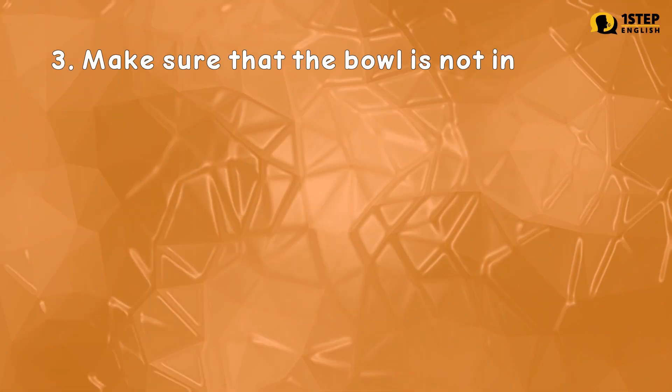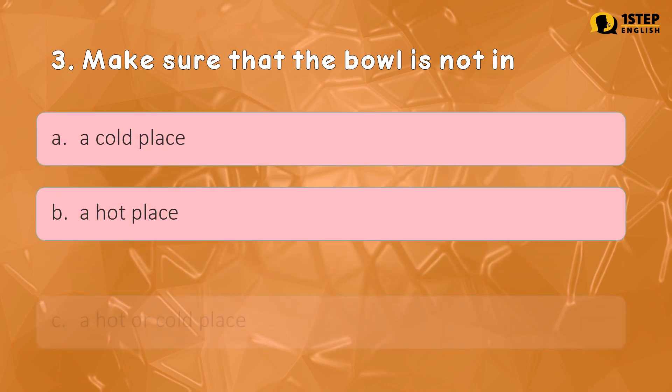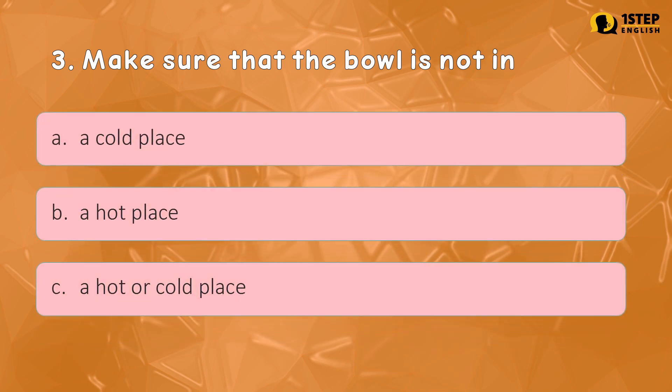Number three: make sure that the bowl is not in — Letter A: a cold place. Letter B: a hot place. Letter C: a hot or cold place. The correct answer is Letter C — a hot or cold place.